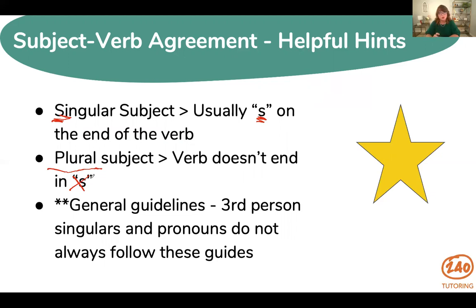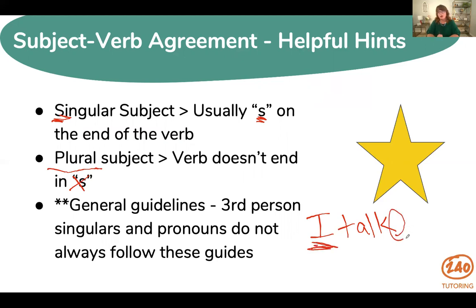These helpful hints don't apply 100% of the time. For example, with third-person singular pronouns, the rules don't always hold. 'I talk to the dog' — I is singular but we do not have an s on that verb. So that's one of those instances where the guideline does not apply. But if I say 'she talks to the dog,' she is singular and we do have an s. So not 100% of the time, but these are some general guidelines with exceptions.